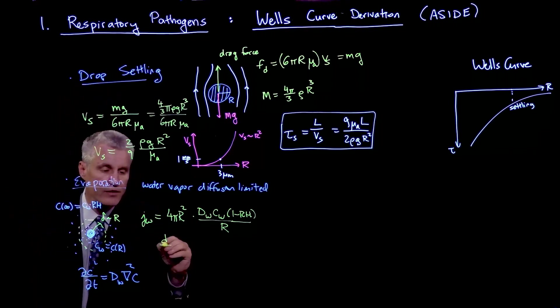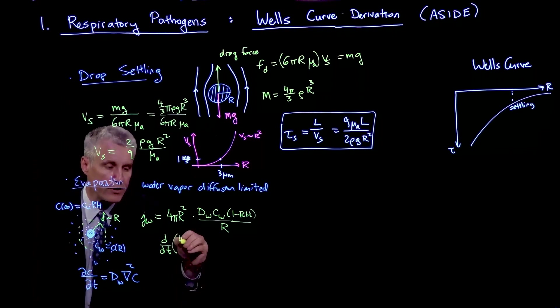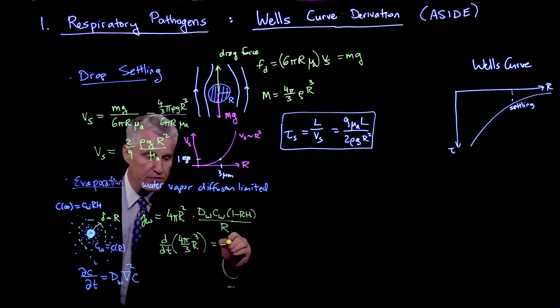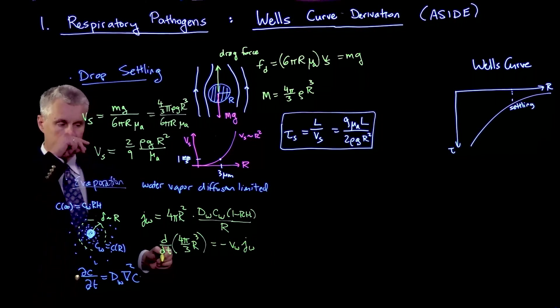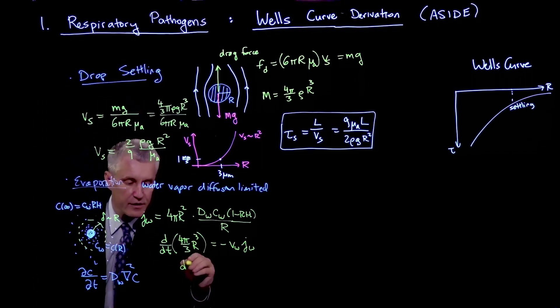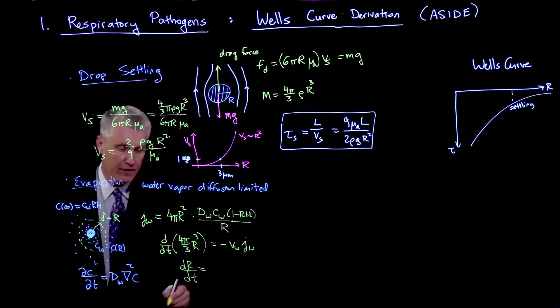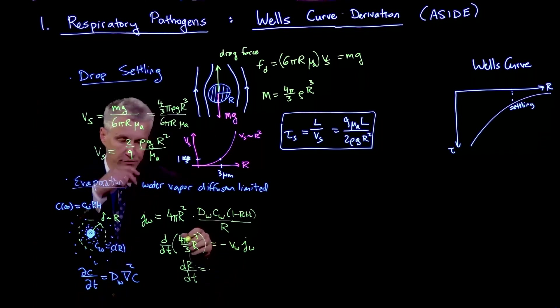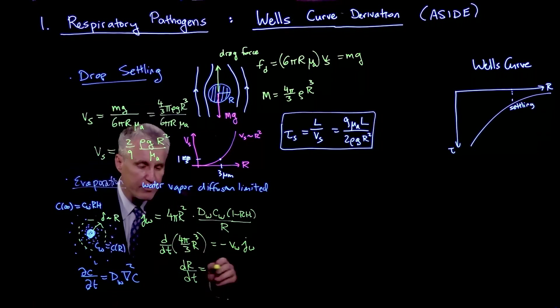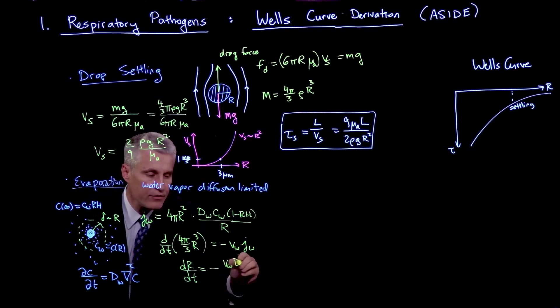I can write down that the change in the size of the water droplet volume, which is 4π/3 r³, is equal to minus the volume of a water molecule times the flux of water. That's basically my volume or mass balance of water. If I plug this in here, then I get dr/dt is equal to, collecting all the terms here. The derivative of r³ is 3r², so the 3's cancel. Then I have 4πr², which cancels this 4πr². So I just have dr/dt is minus vw dw Cw (1 minus rh) divided by r.